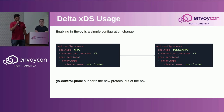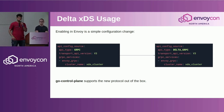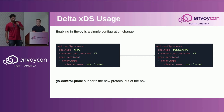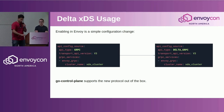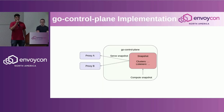Enabling Delta XDS within Envoy is really simple — it's just an API configuration change from gRPC to Delta gRPC. Go Control Plane, a control plane library, supports Delta XDS out of the box; you can just enable it with no additional configuration needed.